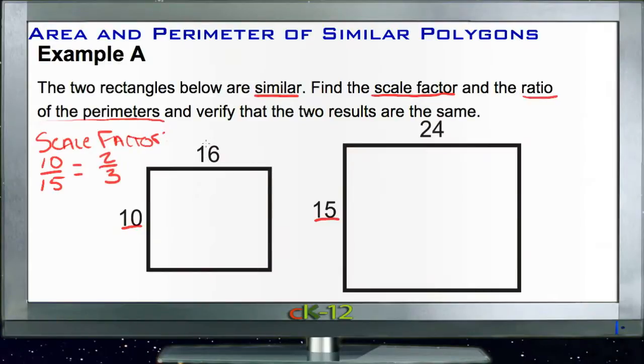Now we need to find the perimeter of each figure. For this one we'd have 16 plus 16 plus 10 plus 10. And for this one we'd have 15 plus 15 plus 24 plus 24.